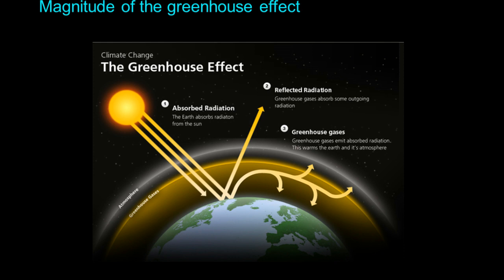The gases responsible for this trapping are called greenhouse gases, which makes sense since the atmosphere acts like the glass in a greenhouse and traps the heat — letting light through but trapping the heat that's generated and raising the temperature. A good example of a greenhouse gas is carbon dioxide. When we refer to the magnitude of the greenhouse effect, we're talking about the quantity of greenhouse gases in the atmosphere.